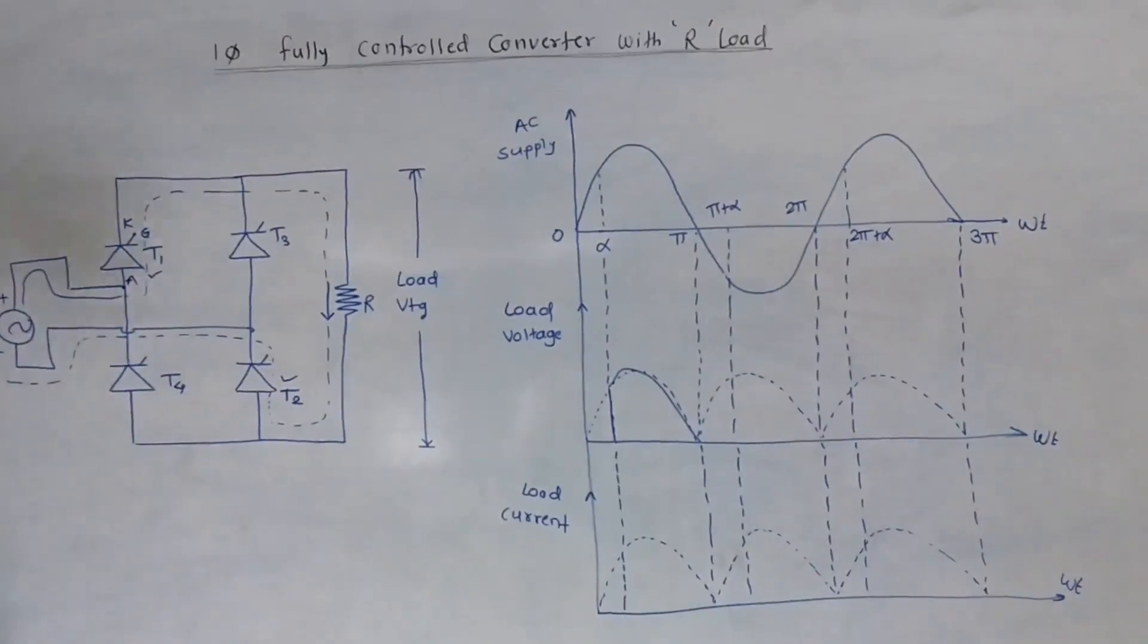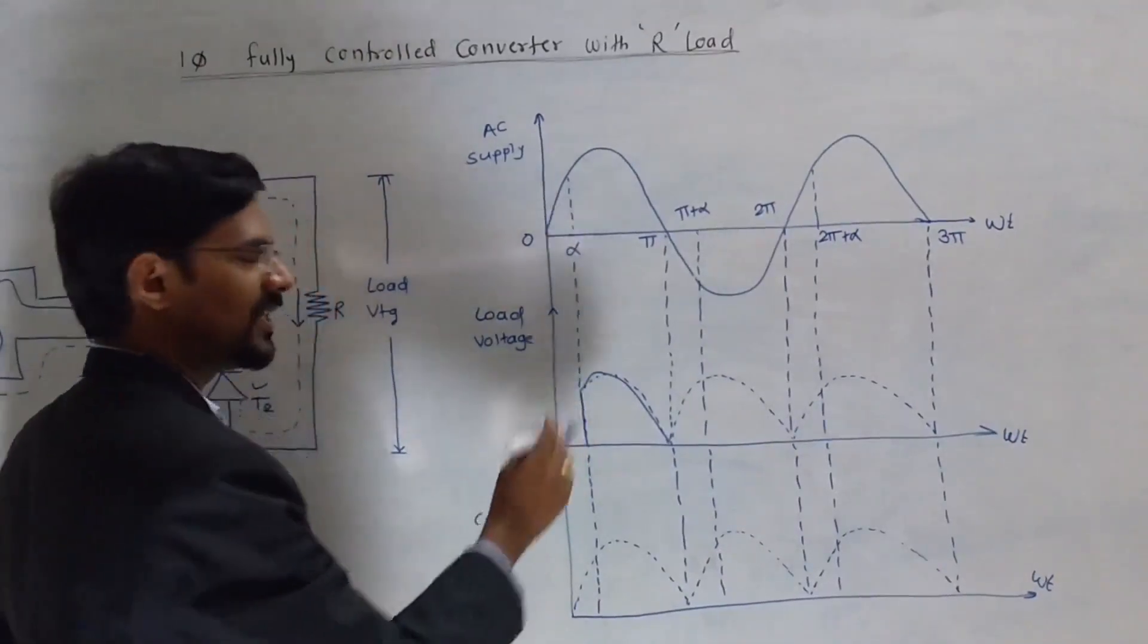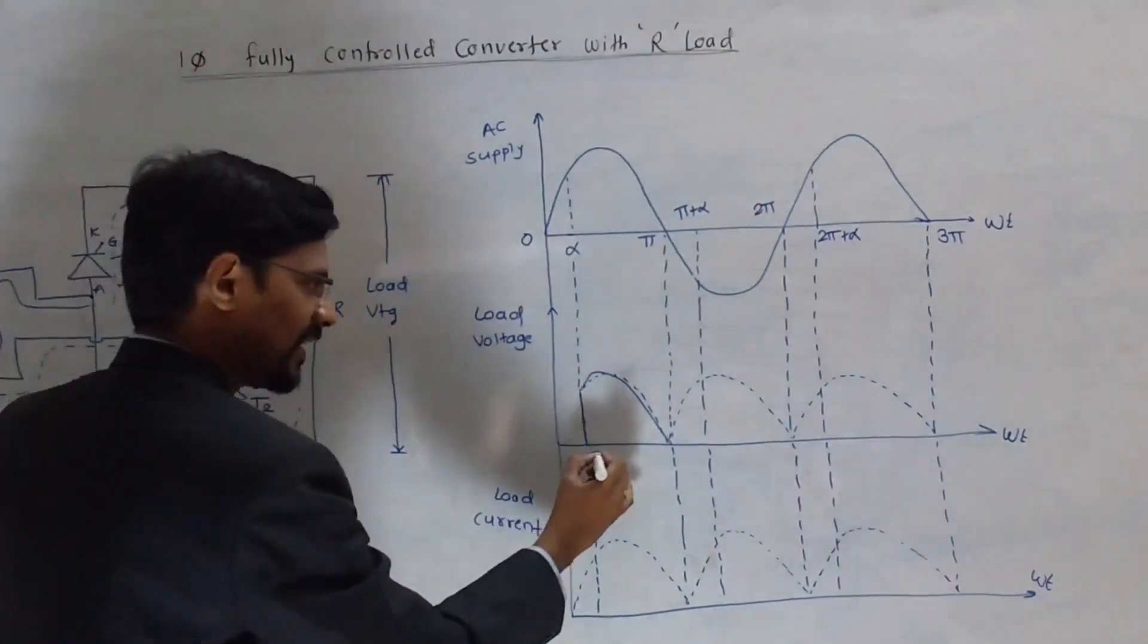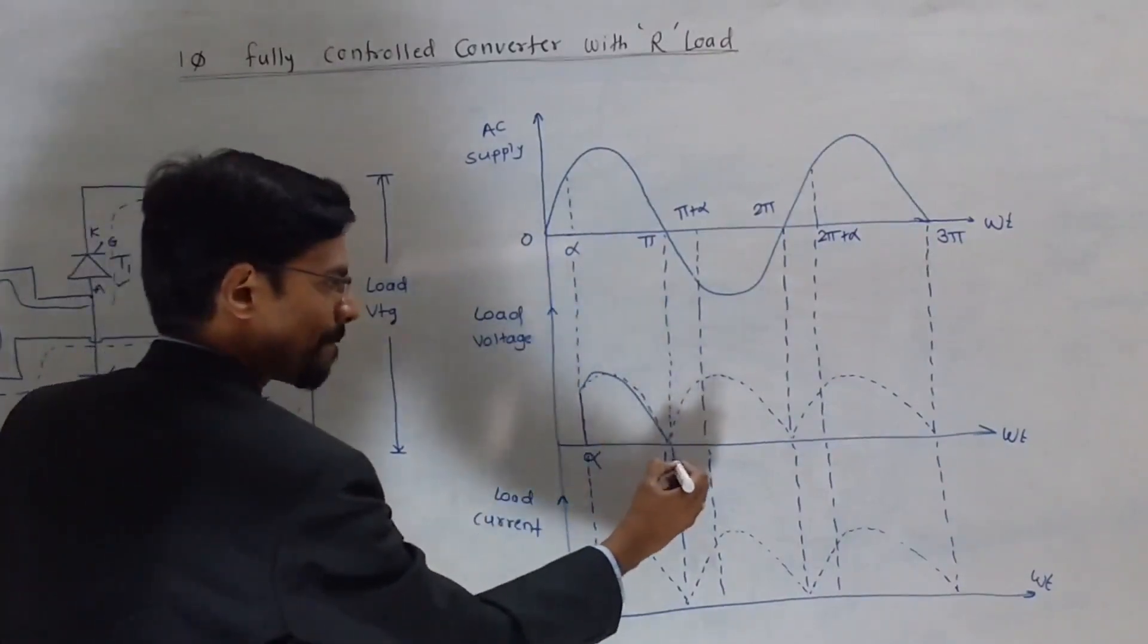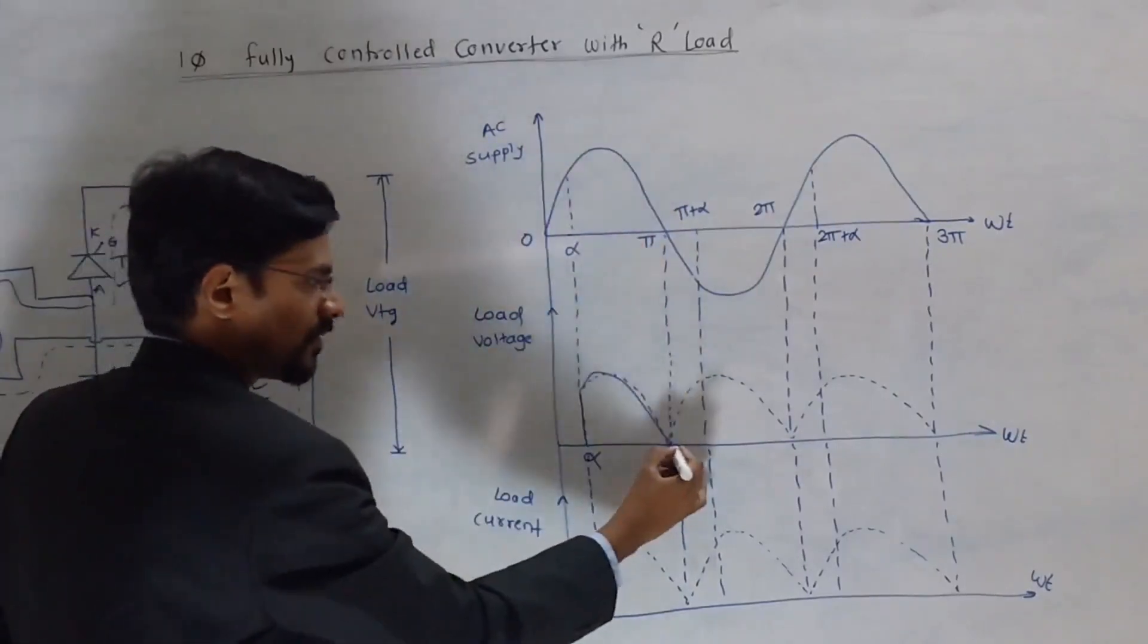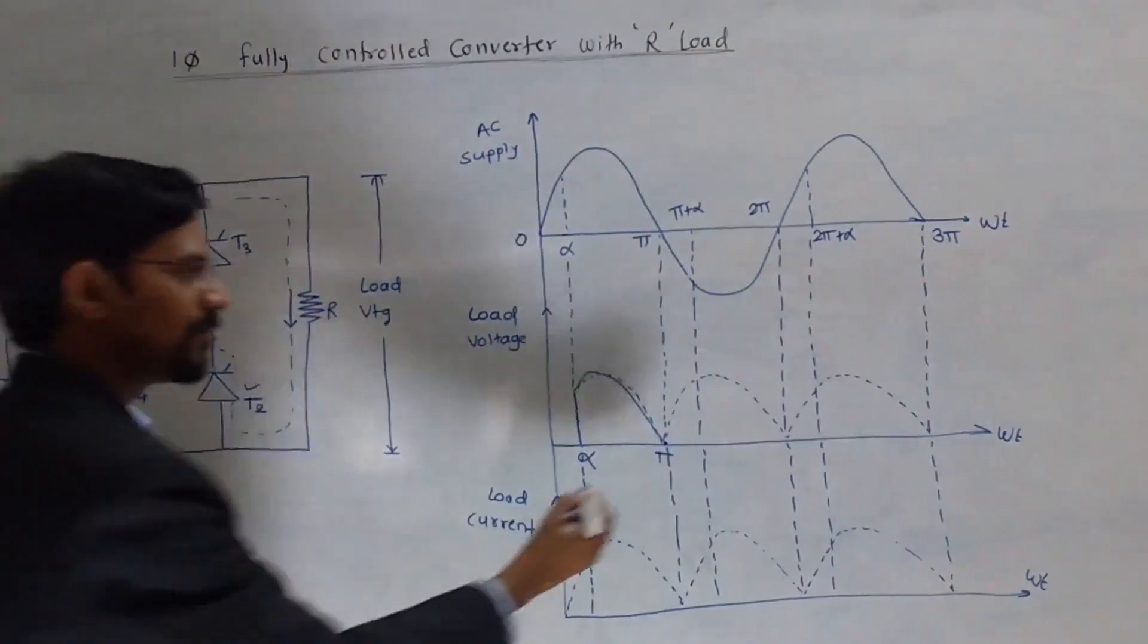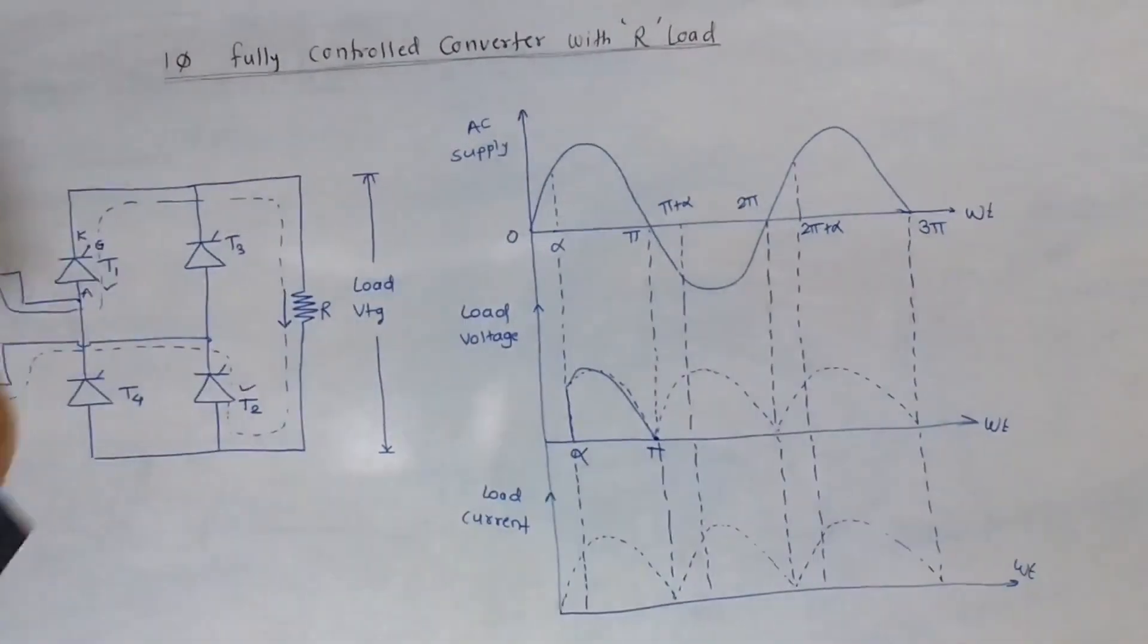With the help of this gate, you can control the output side or output voltage. Therefore, you will get some firing angle and the firing angle is equal to alpha. Up to this angle, we will get the same waveform. And at this angle, because of the natural commutation, this T1 and T2 are going to be commutated.